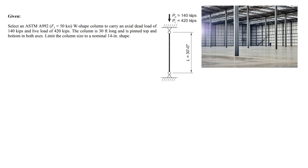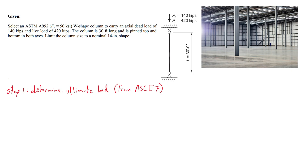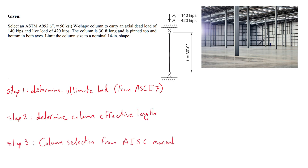Inner columns of steel sheds are mainly assumed to have pinned ends. Here we are limited to choosing from sections of depth of 14 inches and of ASTM A992 material that would be as light as possible but still carry the given dead and live loads. We will approach this problem using the fastest and easiest method: the AISC construction manual. The steps are: determine the ultimate load using the suitable load combination from ASCE 7, determine the column effective length, then select the suitable section from the AISC manual tables.